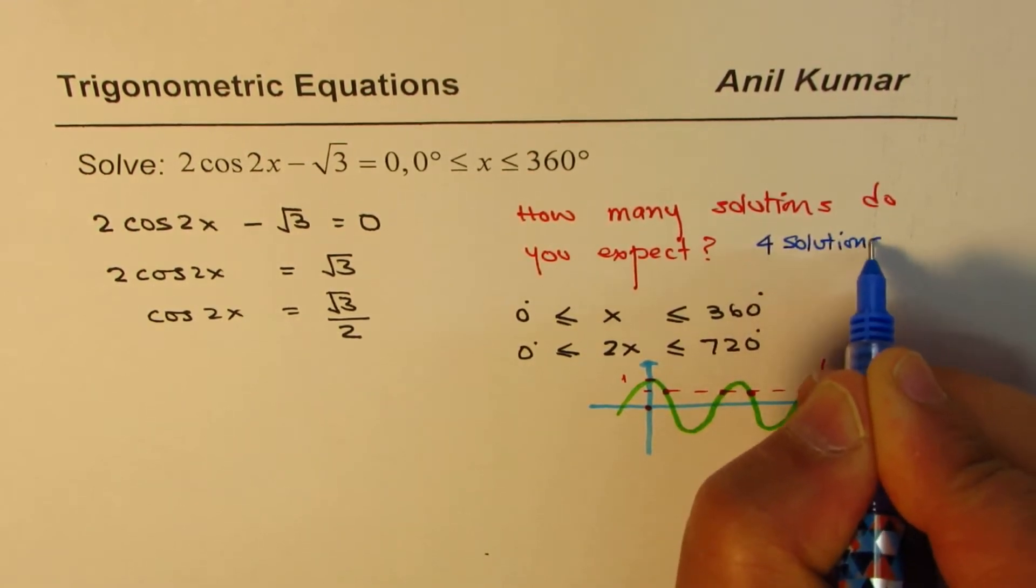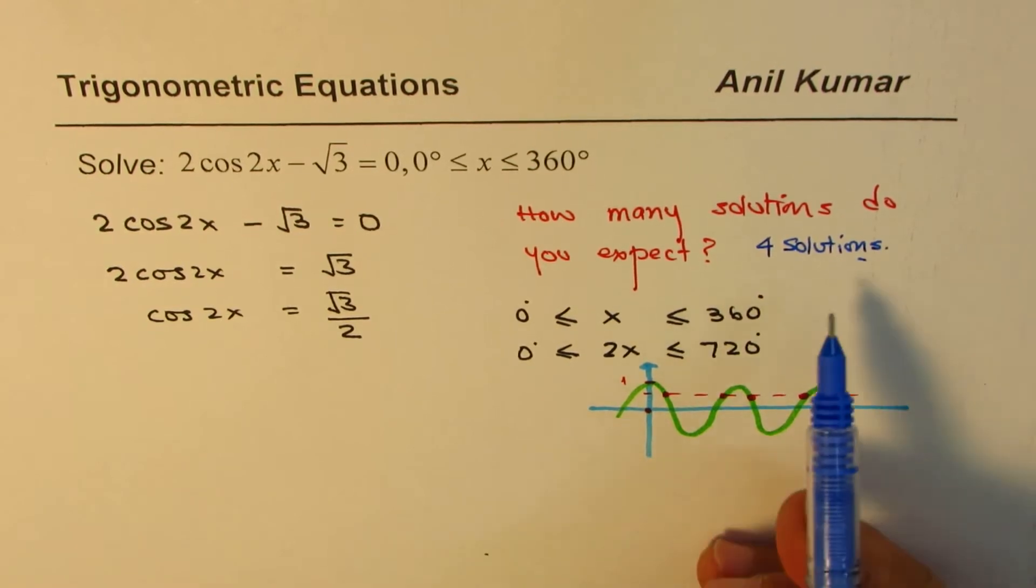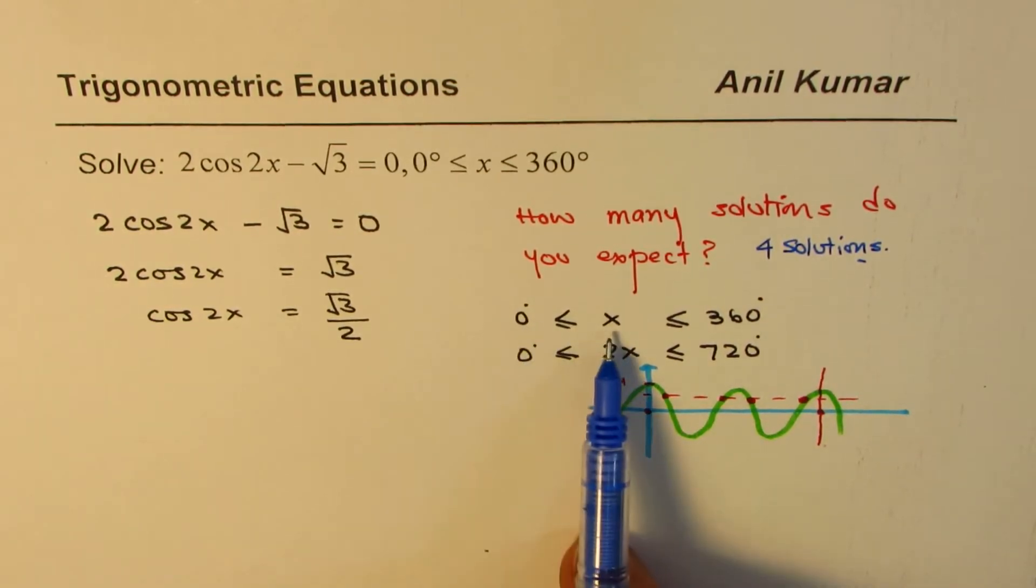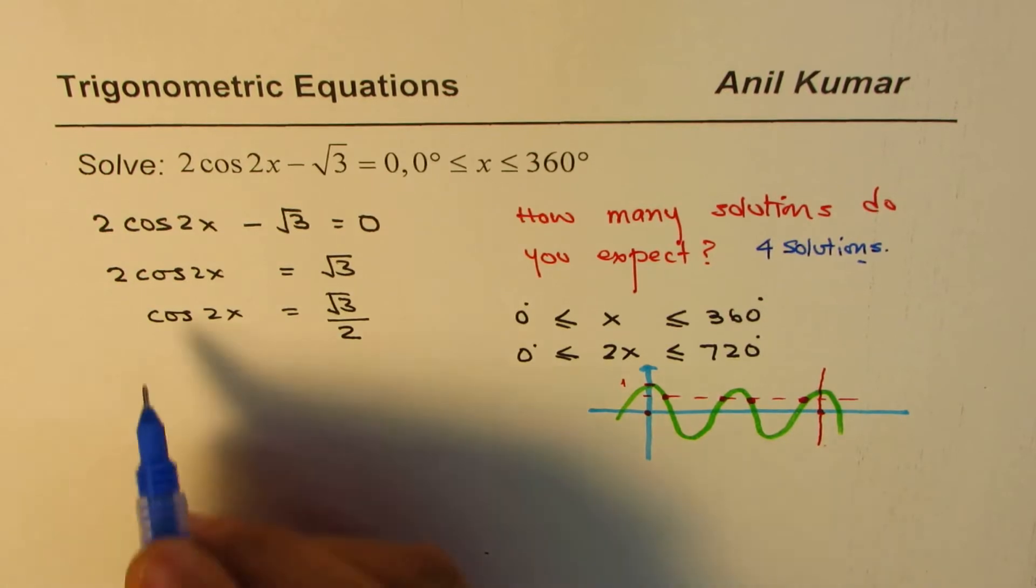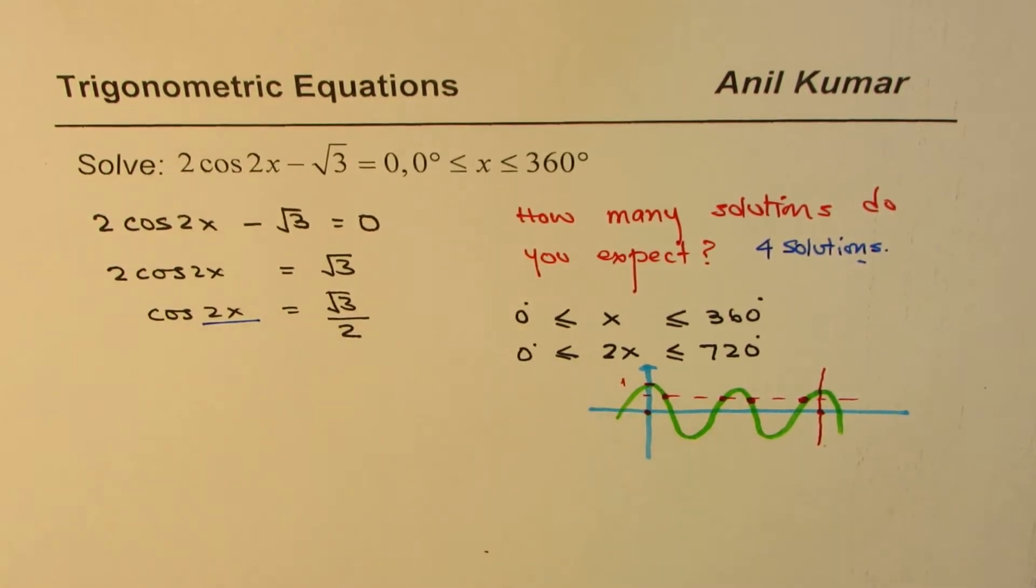Which you can also figure out by writing the domain for 2x since 2x is the argument, not x, right? So I hope that part is clear to you. Now let's get back to the solution.